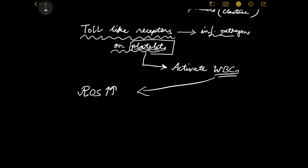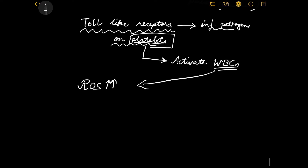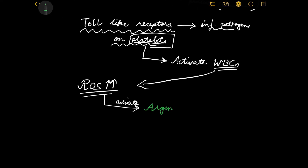This neutrophil extracellular trap is a defensive technique employed by WBCs only when the bacterial load is very high. The neutrophils are producing extra reactive oxygen species, and the concentration of reactive oxygen species is also very high. This will lead to the activation of a special enzyme — that special enzyme is arginine de-iminase, not de-aminase — arginine de-iminase.